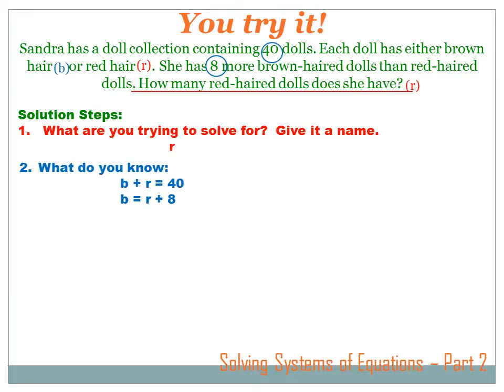Second step: what do we know? The question gave us a couple of bits of information. It said she had a total of 40 dolls, and it also said that she had eight more brown-haired dolls than red-haired dolls. So I can set up a couple of expressions with that information: the number of brown-haired dolls plus the number of red-haired dolls equals 40. The number of brown-haired dolls equals the number of red-haired dolls plus eight.